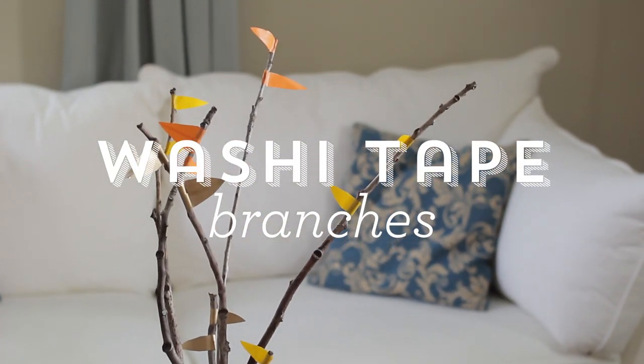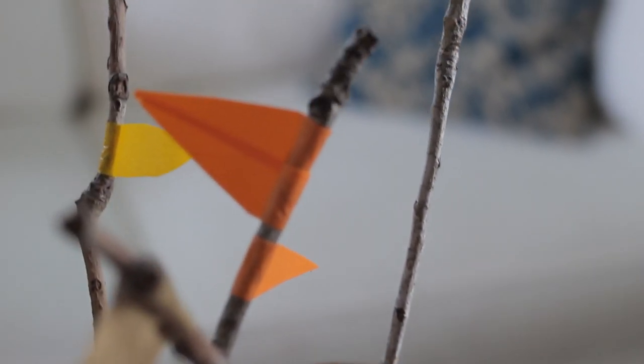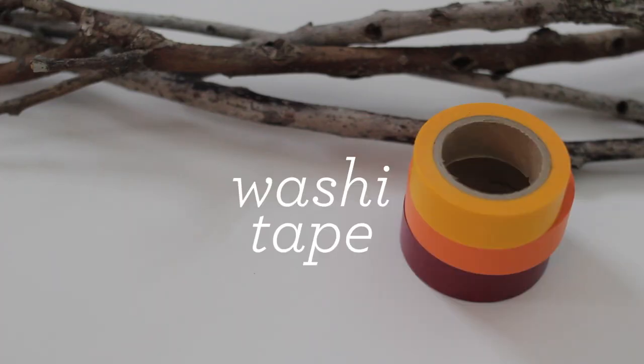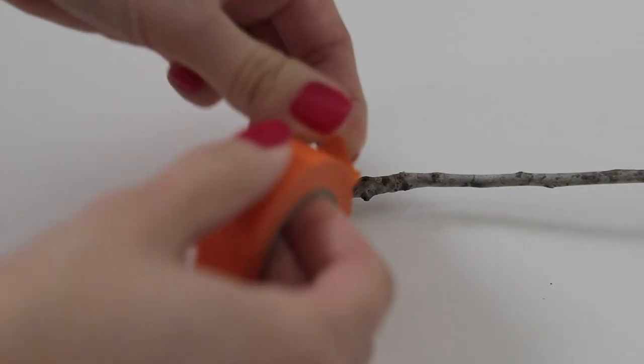Learn to make washi tape branches that are perfect for fall decorating. To get started, you will need twigs, washi tape, and scissors. Small ones work great for this.